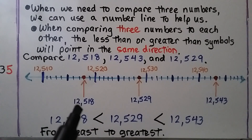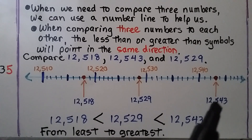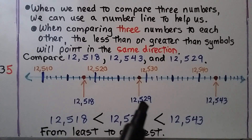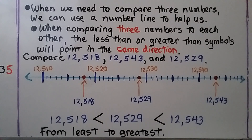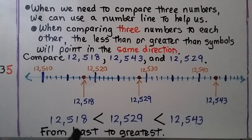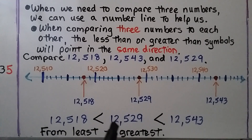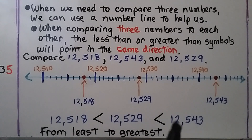We can see 12,518 is the least number, 12,543 is the greatest, and 12,529 is the middle number. We write from least to greatest using less than symbols going in the same direction: 12,518 < 12,529 < 12,543.